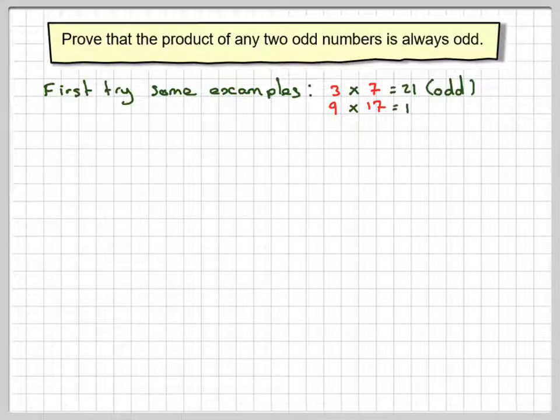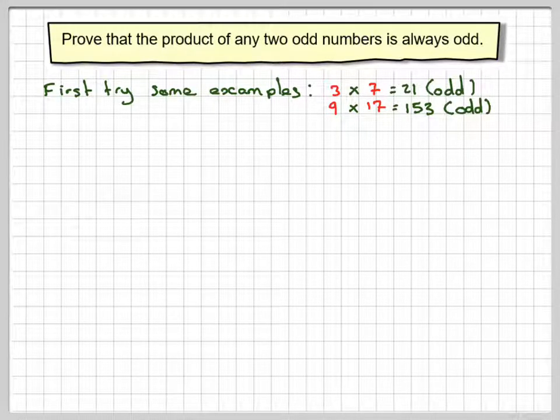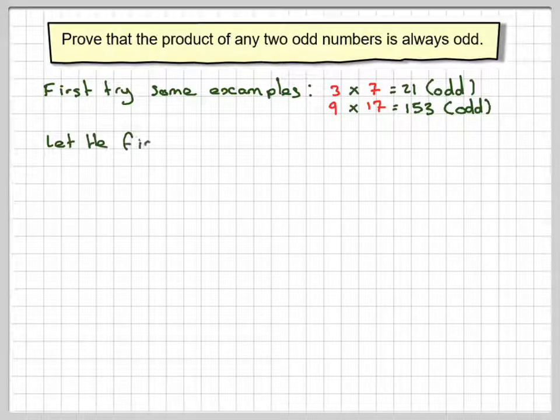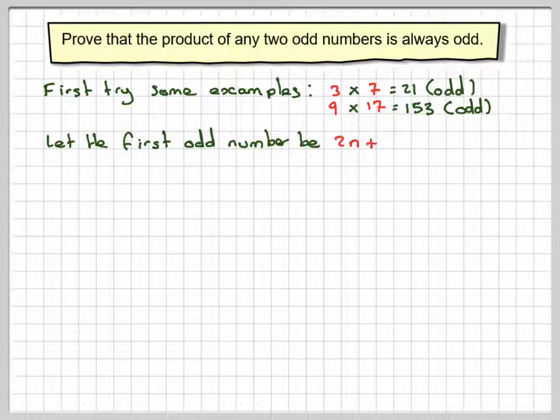9 times 17, that gives me 153, that is odd. So it's worked for two cases, but we now have to prove it for every case.